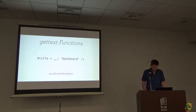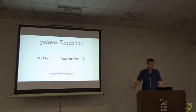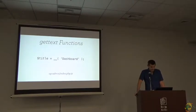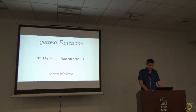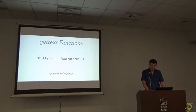In this example, you can see we have the double-underscore function, which takes the first argument 'dashboard' — the English string. The idea of this GetText function is that it registers the string 'dashboard', and the return value should be the translation of 'dashboard' in your current language.